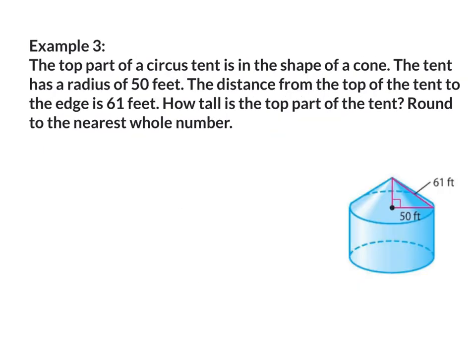Example 3: The top part of a circus tent is in the shape of a cone. The tent has a radius of 50 feet, and the distance from the top of the tent to the edge is 61 feet. How tall is the top part of the tent? Round to the nearest whole number. Across from the right angle is the hypotenuse, side C. The medium leg is 50 feet, side B. The shorter leg is side A, which is the missing side. The formula is A squared plus B squared equals C squared.